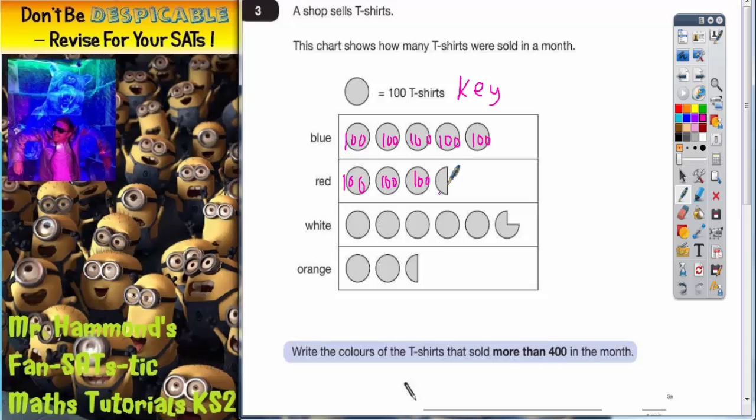Now the problem you've got is this bit here is not a full circle. This is half of a circle. So if a full circle is worth 100, half a circle must be worth half of that. Half of 100 is 50. So that bit is just worth 50.